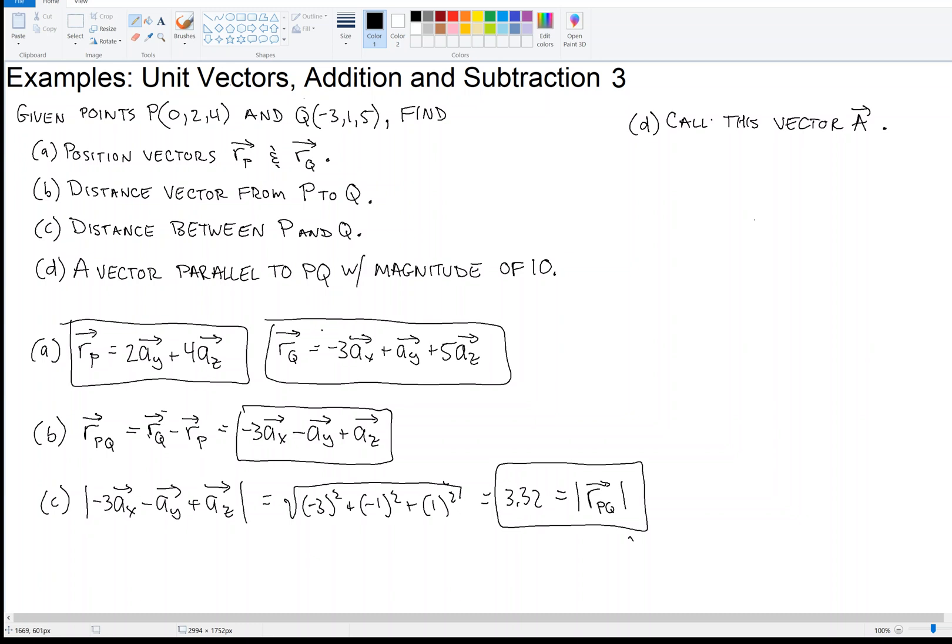So how do we find a unit vector in that direction? Well, we already have a vector in that direction, right? We already have a vector, and the vector that we have is the distance vector from P to Q. So we take that vector, which was our answer to part B, right?